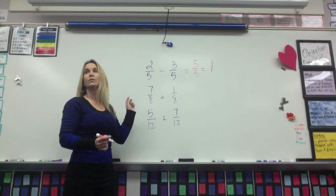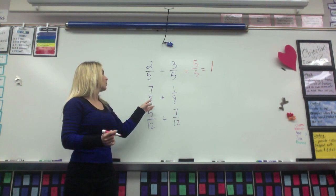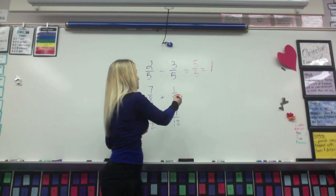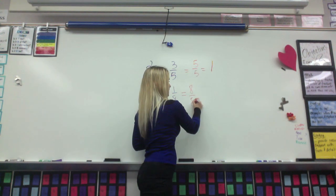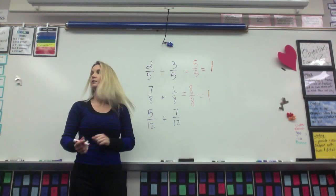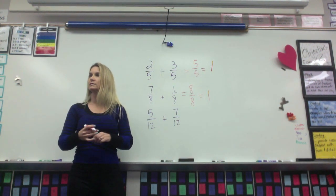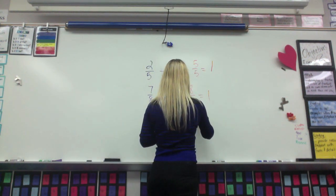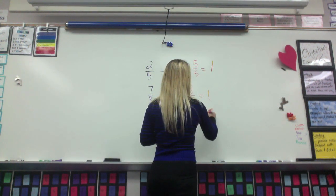Which equals 6. We're not talking in between. 7 eighths plus 1 eighth. What did you get, Rachel? I got 8 eighths. 8 eighths, which equals 1 whole. Angelica. So 5 twelfths plus 7 twelfths equals 12 twelfths, which equals 1 whole.